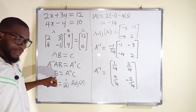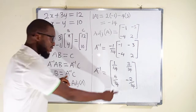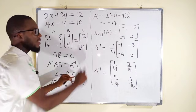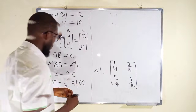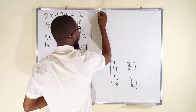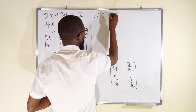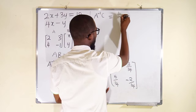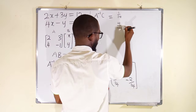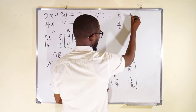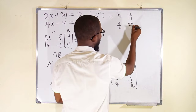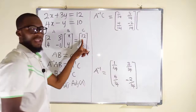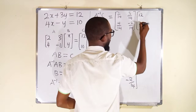To find B, which is the required solution, we are going to take A inverse and multiply it by the constants. So A inverse multiplied by C: A inverse is 1 over 14, 3 over 14, 4 over 14, and negative 2 over 14. And for the constants, we have 12 and 10.